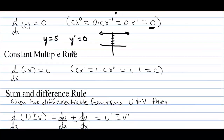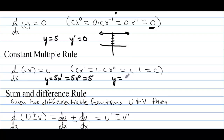The constant multiple rule: if we take the derivative of c times x, for example y equals 5x, there's really a power of 1 sitting there. So 1 times 5 is 5, we reduce that power by 1 and get 5x to the 0, but we write just 5. So if we have y equals 3x, the derivative y prime is 3.